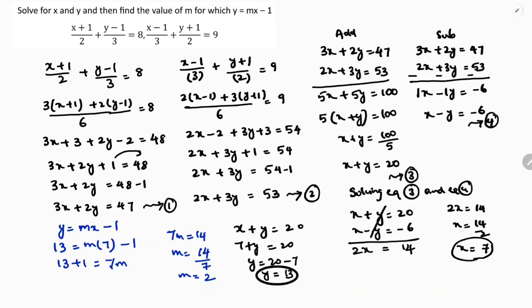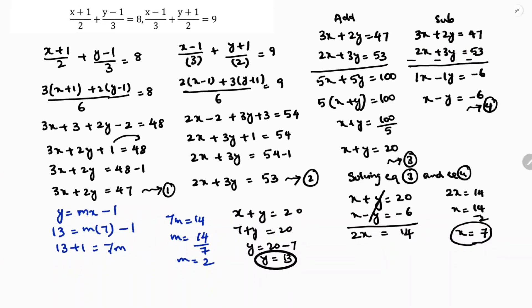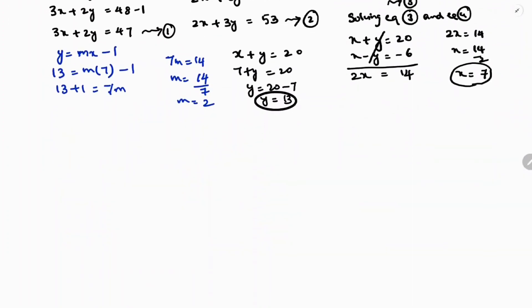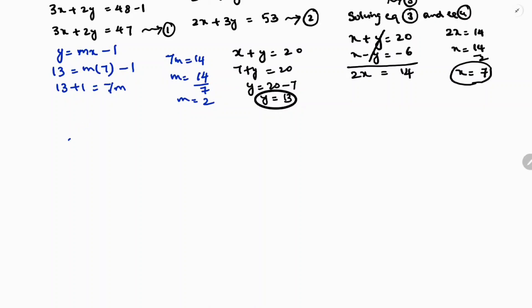Now let's look at equations 1 and 2 again. I solved using the special case method, but you can also solve by direct elimination. So: 3x plus 2y is 47, and 2x plus 3y is 53.